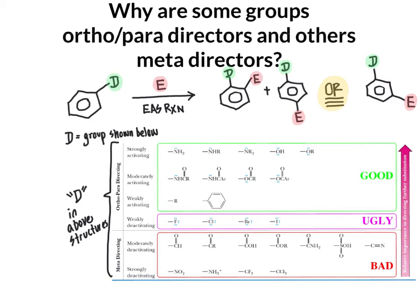What we are going to look at in this video is why some groups are ortho-para directors and others are meta directors. By the end of the video, you will not only be able to explain why any group off this chart would act as a meta director or an ortho-para director, but you will also have mechanistic insights that allow you to not rely on memorization — instead relying on your understanding of this concept to evaluate whether a particular group bonded to an aromatic ring would act as an ortho-para director or a meta director, even for groups not listed on this chart.